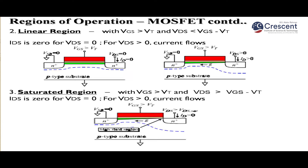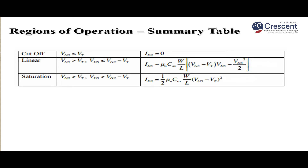In the saturation region, Vgs is greater than the threshold voltage and Vds is greater than the gate effective voltage (Vgs − Vt). The more positive drain-to-source voltage increases the depletion layer toward the drain terminal, narrowing the channel near the drain. This channel length modulation causes the drain current to become constant in the saturation region.